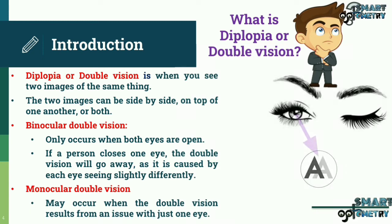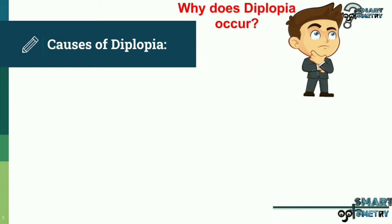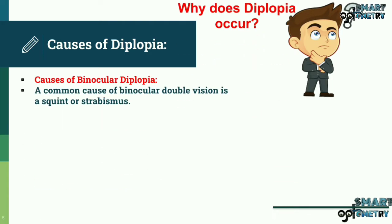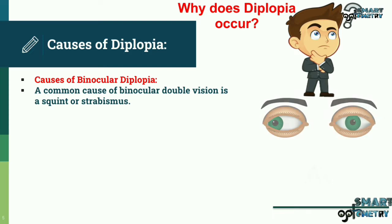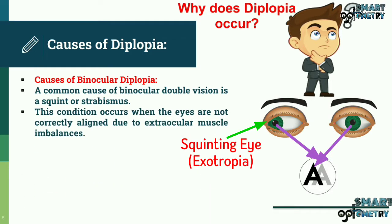the double vision will go away as it is caused by each eye seeing slightly differently. Monocular double vision may occur when the double vision results from an issue with just one eye. A common cause of binocular double vision is a squint or strabismus — a condition where the eyes are not correctly aligned due to extraocular muscle imbalances.